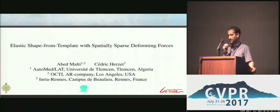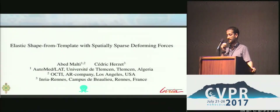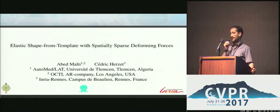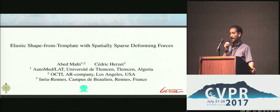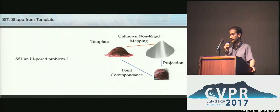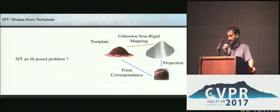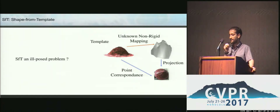I'll present my work on elastic shape from template with spatially sparse deforming forces. Shape from template is a problem to infer 3D reconstruction from a 3D shape given its 2D projection. Any alien 3D shape can project onto this 2D projection, so to avoid the ambiguity we need prior constraints.